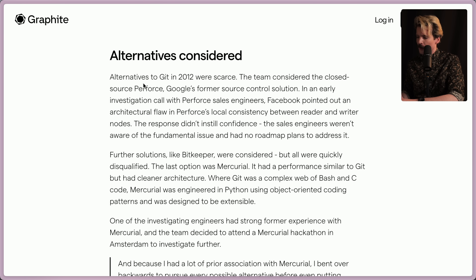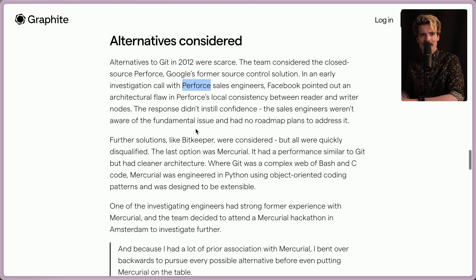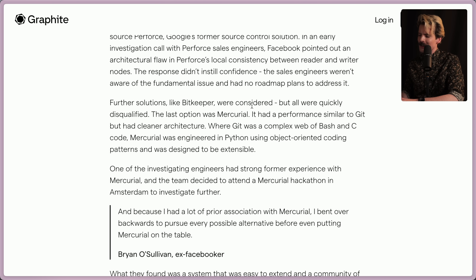Alternatives to Git in 2012 were scarce. The team considered the closed-source Perforce, Google's former source control solution. In an early investigation call with the Perforce sales engineers, Facebook pointed out an architectural flaw in Perforce's local consistency between reader and writer nodes. The sales engineers weren't aware of the fundamental issue and had no roadmap plans to address it. Further solutions like BitKeeper were considered, but all were disqualified. The last remaining option was Mercurial. It had performance similar to Git, but had a cleaner architecture. Where Git was a complex web of Bash and C code, Mercurial was engineered in Python using object-oriented code patterns, and it was designed to be extensible.